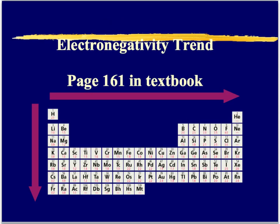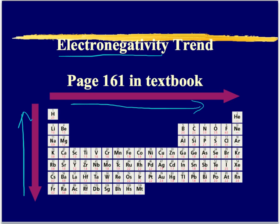Before we get into the chapter and talking about the bonds, we need to review electronegativity. Remember that electronegativity was the ability of one atom to attract the electrons from another atom. On the periodic table, as we move across the rows, electronegativity does increase. As we move up the rows, we have high electronegativity. Oxygen and fluorine are generally considered our most electronegative, with fluorine being the absolute most electronegative element on the periodic table.